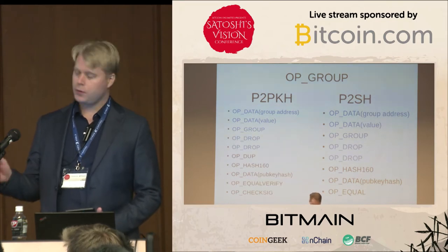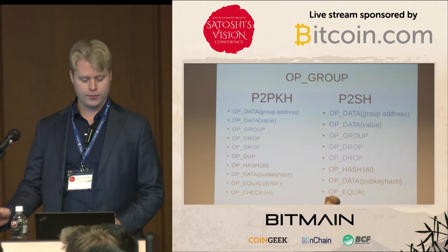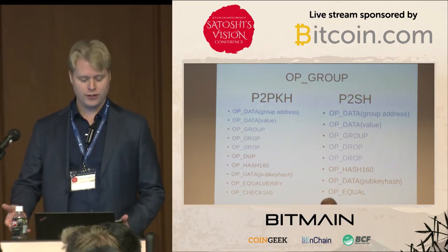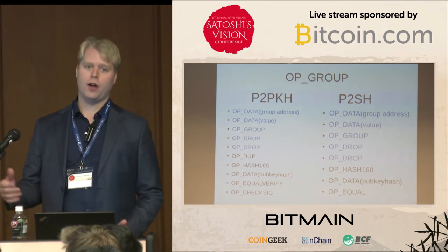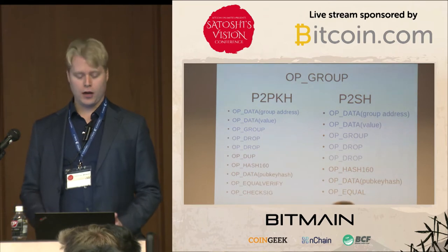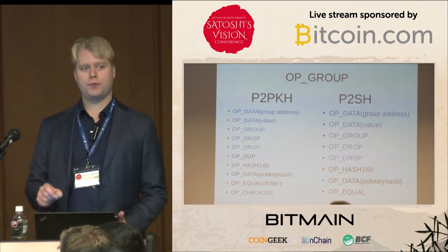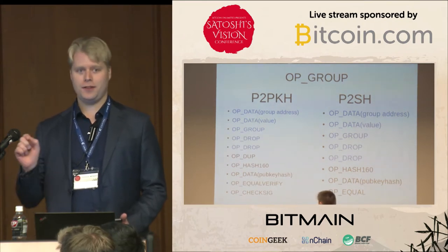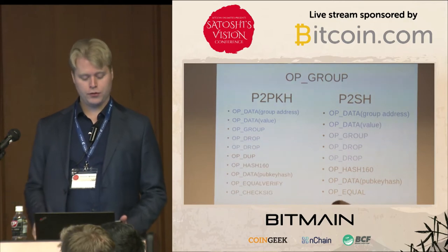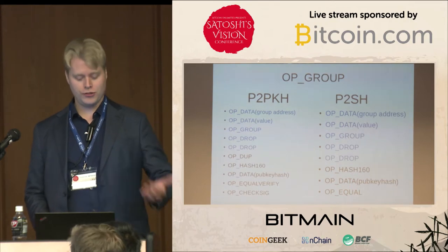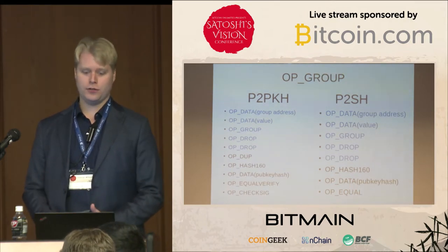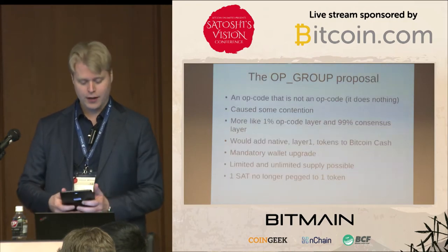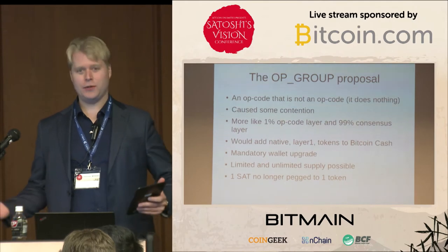All the new OP_GROUP properties are shown in blue and the black text is the normal scripts. You start by putting data, which is the group address — just a hash160. Then you put the value, how many tokens there are, and then OP_GROUP, which is still a no-operation opcode. It doesn't do anything, but it helps the node understand that this is a token. Then you have two DROPs to make sure that the data pushed to the stack is ignored and doesn't actually affect the script's evaluation.